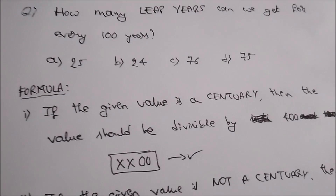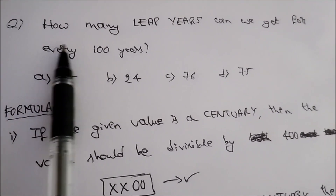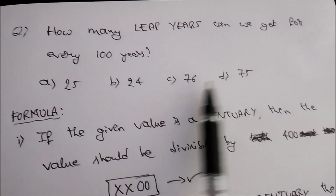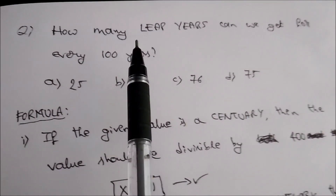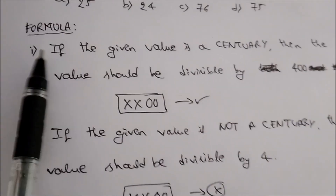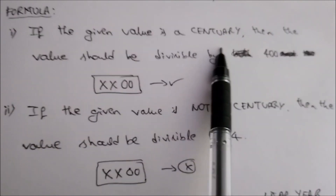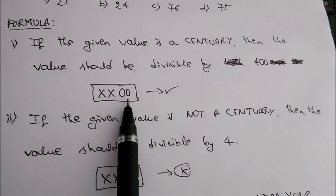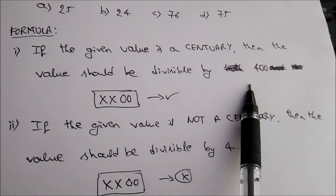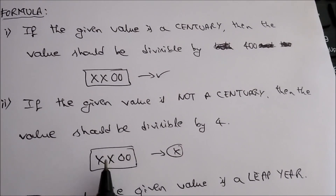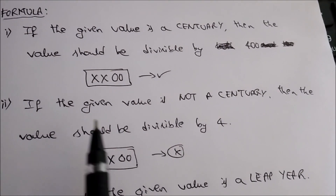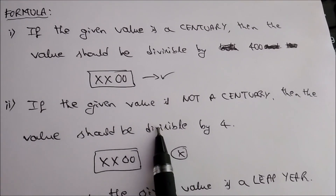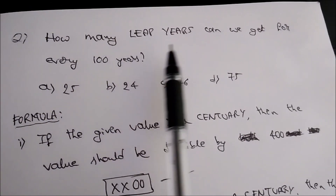Hi friends, today I have taken a problem from calendars. The question is: how many leap years can we get for every hundred years? The values are 25, 24, 76, and 75. First, we need to know how to find a leap year. The formula is: if the given value is a century, it should be divisible by 400 — meaning if the last two digits are zeros, it must be divisible by 400 to be a leap year. If it is not a century, the value should be divisible by 4.